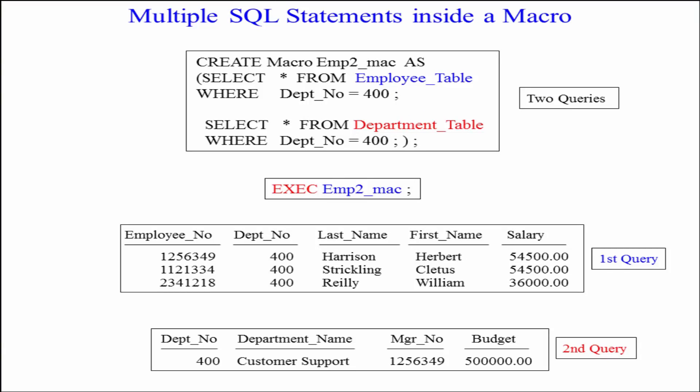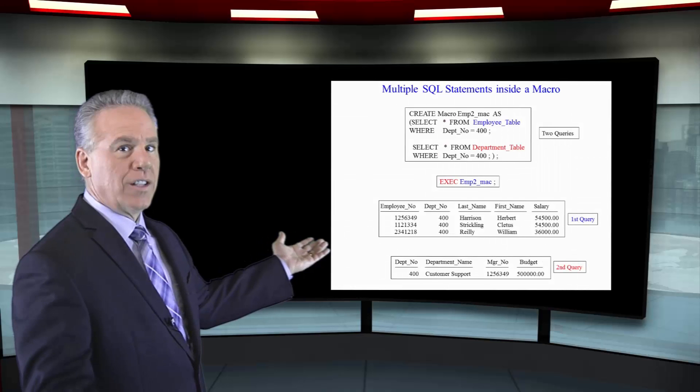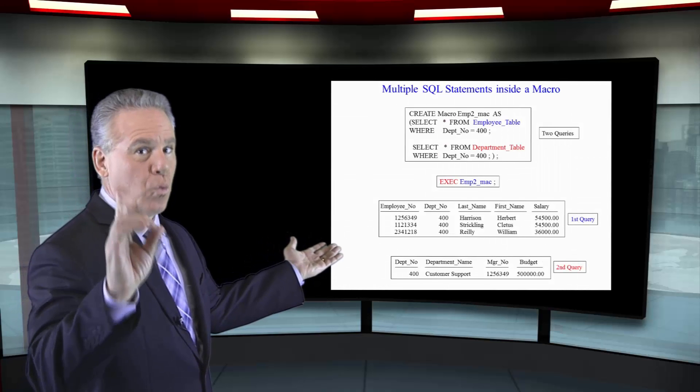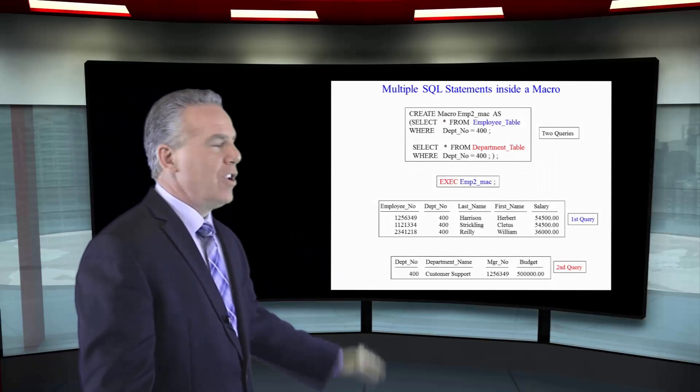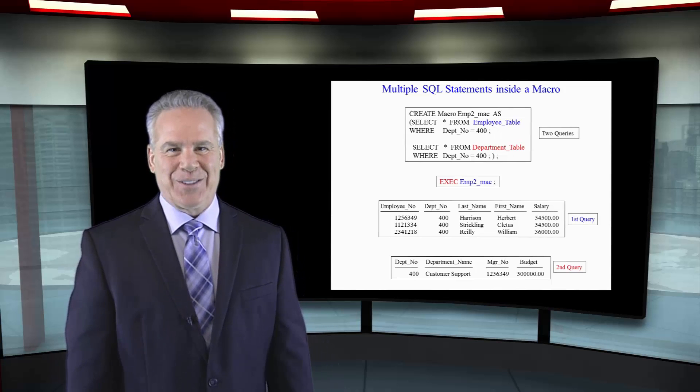As you can see here, I'm going to create another macro. Macro m2 as select everything from the employee table where department number equals 400, and then select everything from the department table where department number is equal to 400. Semicolon, close paren, semicolon. When you run this, it runs again as one transaction and you're going to get both answer sets.